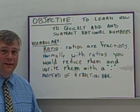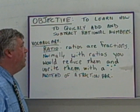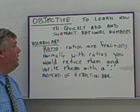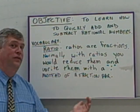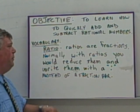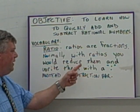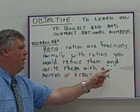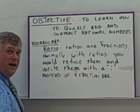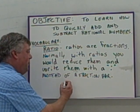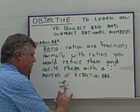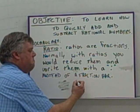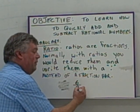Now, before we get into that, there is some vocabulary you're going to need to know. Ratio. Ratios are fractions. And normally with ratios, you would reduce them and write them with a colon instead of a fraction bar. So if you had something like, well, let's say we had 6/9,